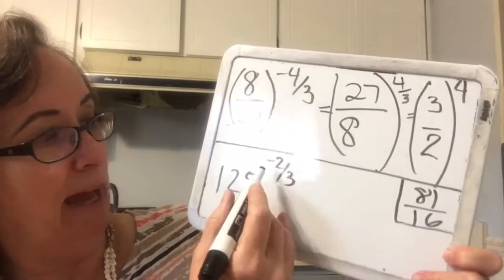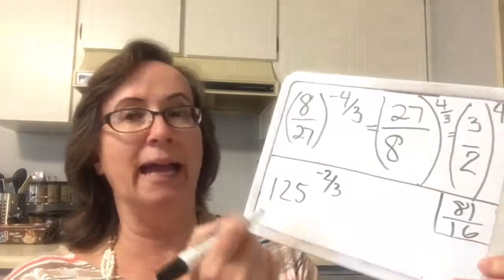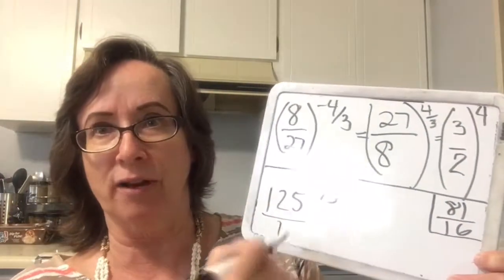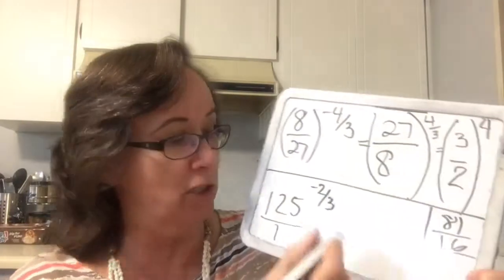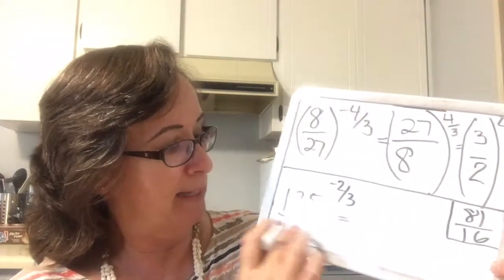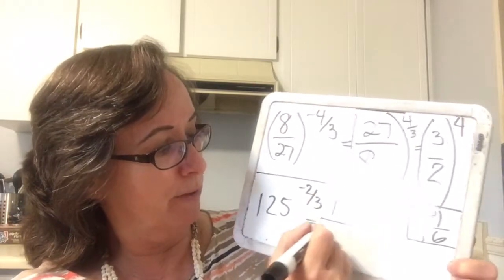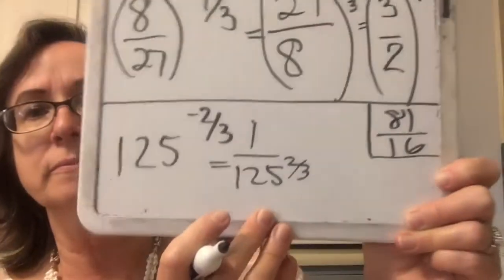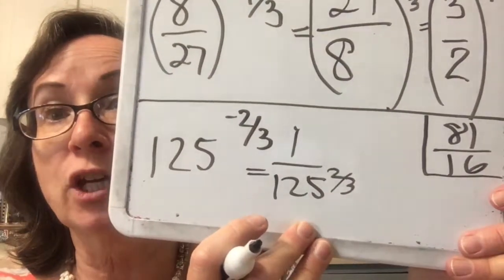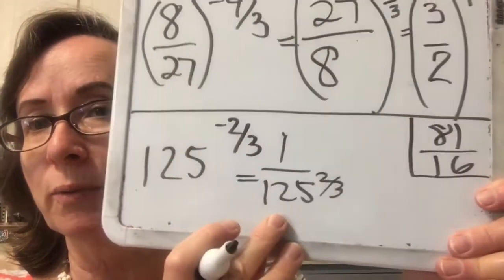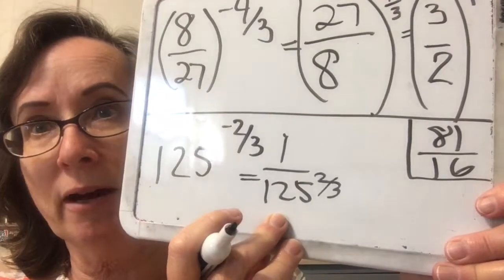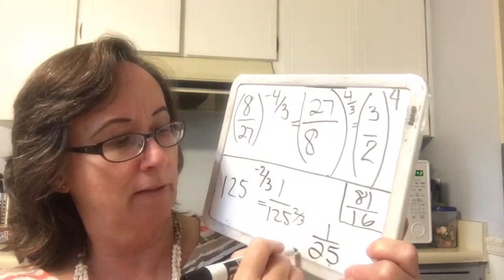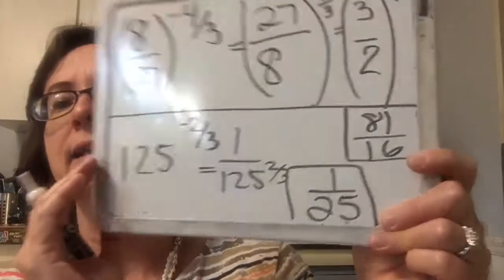Then we have 125 to the negative 2/3. I can think of this as 125 over 1, flip the whole thing, and get 1 over 125 raised to the 2/3. The cubic root of 125 is 5, and 5 squared is 25. So we get 1 over 25 for that last one.